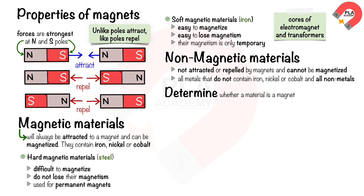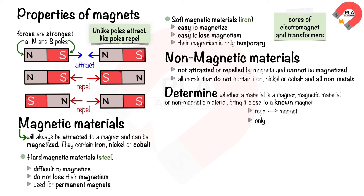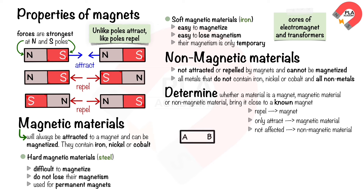To determine whether a material is a magnet, a magnetic material, or a non-magnetic material, bring it close to a known magnet. If it can be repelled by the known magnet, then it is a magnet. If it can only be attracted and not repelled, then it is a magnetic material. If it is not affected, then it is a non-magnetic material.